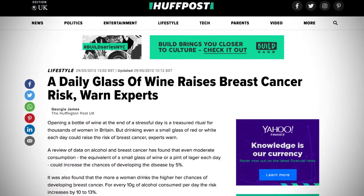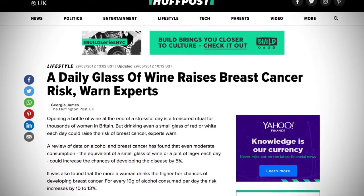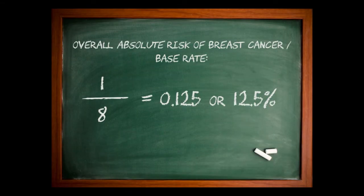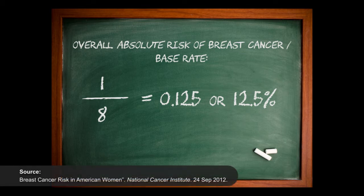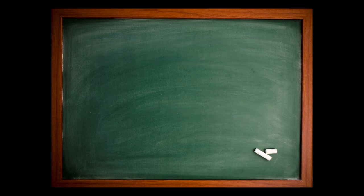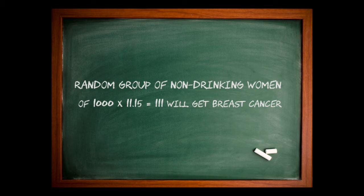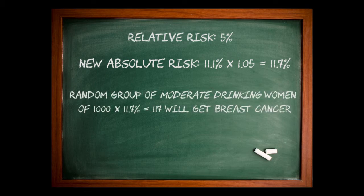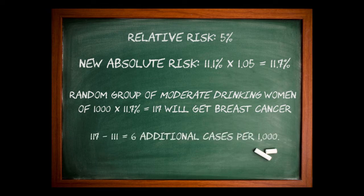Now suppose you see another media headline that reports that a glass of red wine raises the lifetime risk of breast cancer by five percent. Then you discover the base rate, or prevalence of breast cancer, is 1 in 8, or 12.5%. Say the rate for non-drinkers is 1 in 9, or 11.1%, meaning 111 women out of a random group of non-drinking women of a thousand will get breast cancer. An increase of 5% means this 11.1% increases to 11.7%. This increases the total number of breast cancer cases to 117 out of a thousand, six additional cases per 1,000.